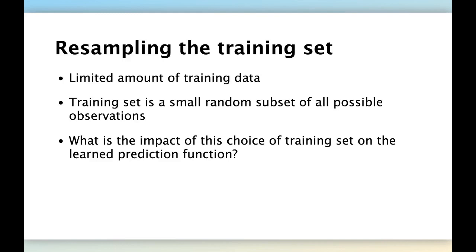But those tens of thousands of data points, they are taken at random in the general population in the US. And so what if we had access to a different subset? Not the one that we observe, but another one. We are taking the same survey procedure to pick them at random. What is the impact of this choice of the training set on the learned prediction function? How much will it change?